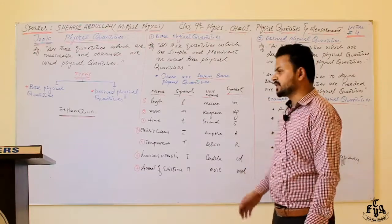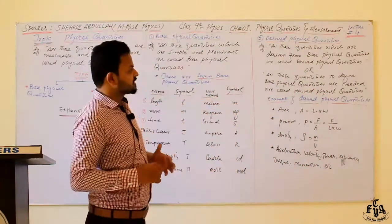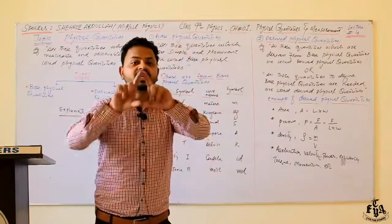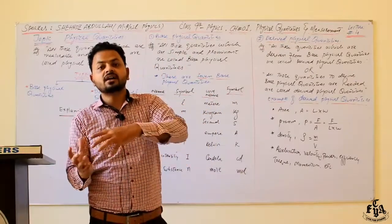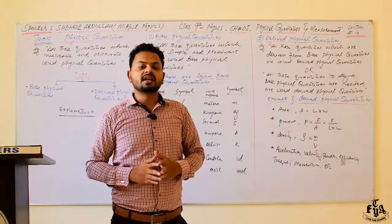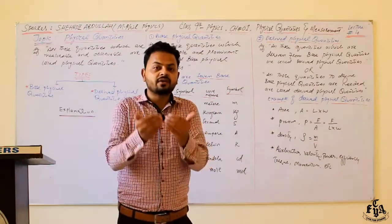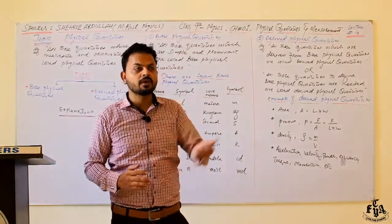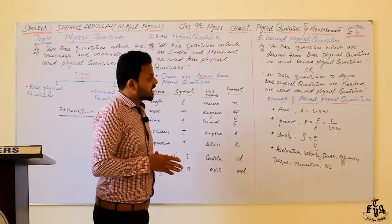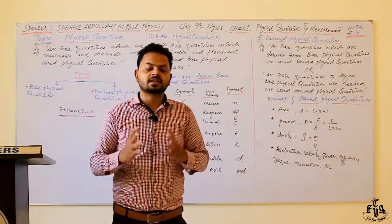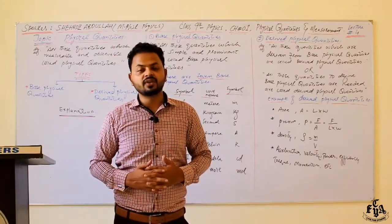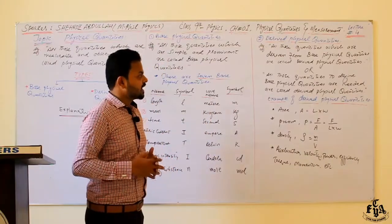Now we will discuss derived physical quantities. As the name suggests, derived physical quantities are those which are derived from base physical quantities. They can be defined and explained in terms of base physical quantities.